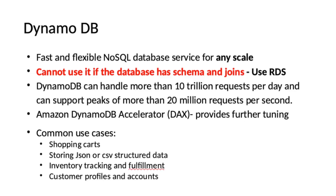Next topic is DynamoDB. Amazon DynamoDB is a fast and flexible NoSQL database service offered from AWS Cloud. DynamoDB cannot be used if the database has schemas and joins. DynamoDB can support up to 20 million requests per second and 10 trillion requests per day. Amazon DynamoDB Accelerator (DAX) is an add-on service used to tune DynamoDB for better performance. Common use cases include databases for shopping carts, storing JSON or CSV structured data files, inventory tracking and fulfillment applications, and customer profiles and accounts databases.